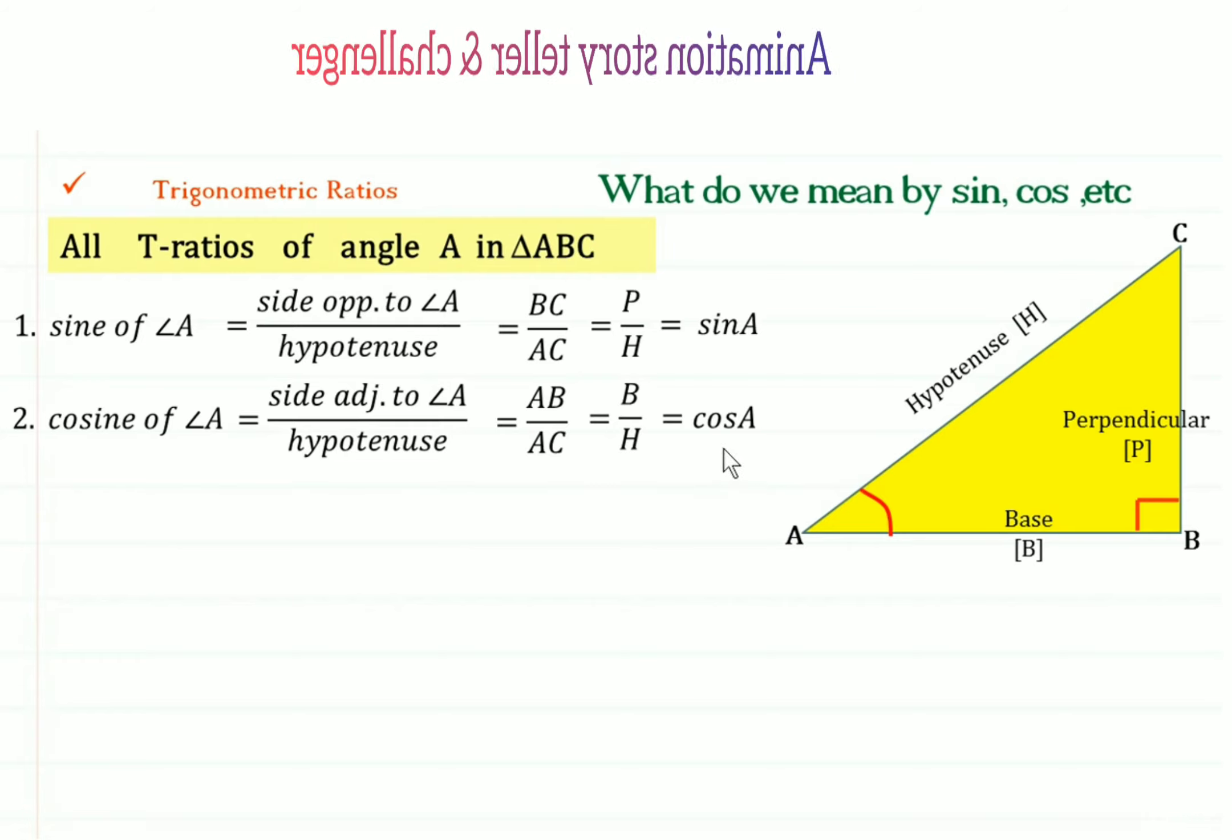And in short it is written as cos A. Again, cosine of angle A means cos A.